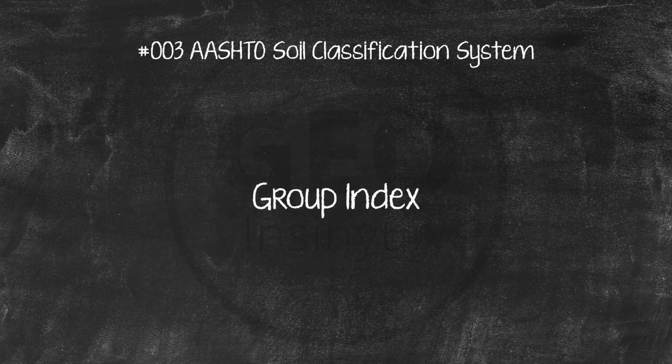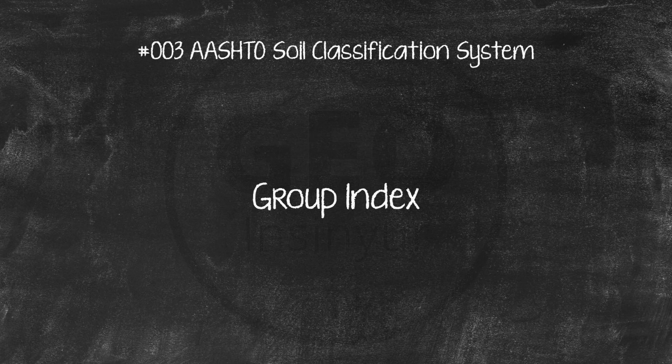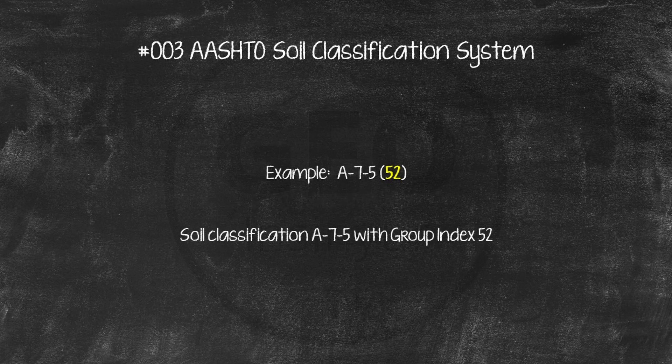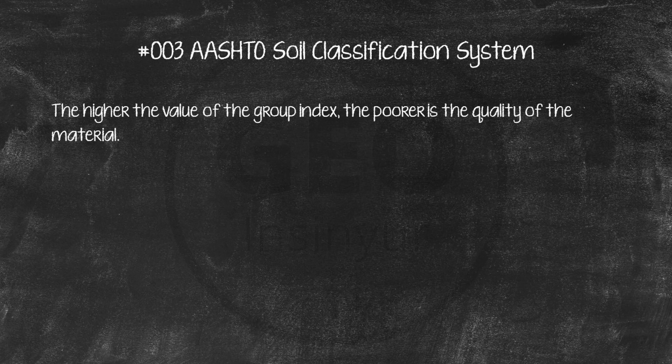Group Index. The group index, GI, is a means of rating the value of a soil as a subgrade material within its own group. It is not used to place a soil in a particular group that is done directly from the results of sieve analysis, the liquid limit and plasticity index. The group index number is written in parentheses after the group or subgroup designation. The higher the value of the group index, the poorer is the quality of the material, so the GI should not exceed 20 for any of groups A4 through A7.